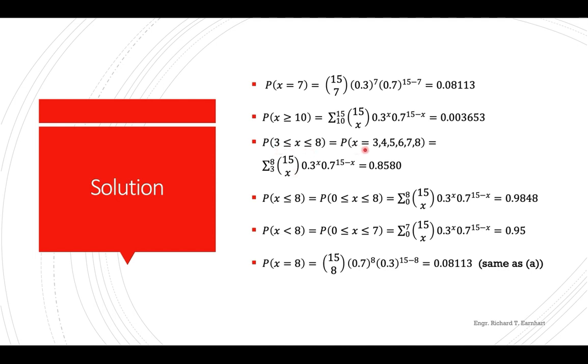Now from 3 to 8, that will be 3, 4, 5, 6, 7, 8, or using the summation function. So your initial index will be 3 then up to 8, and then the same of course, the same formula, because n is constant, p and q are constant. So it will just vary in the values of X. Then you should get 0.8580.